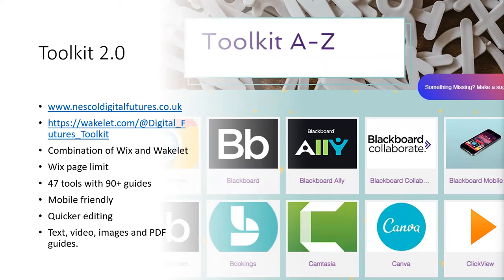We like Wakelet because it's mobile friendly, accessible, has an e-reader available, and is much quicker to edit. With this Wakelet body holding all our content, we could expand to 47 tools — regularly used by our staff — with up to 90 guides. For example, Blackboard Mobile splits into about five different guides, Collaborate into four, so staff can find a specific thing without having to learn everything.